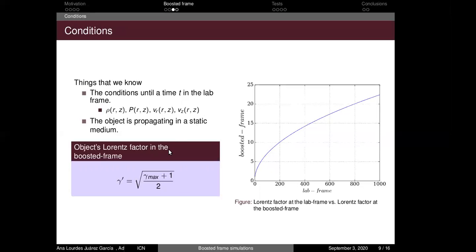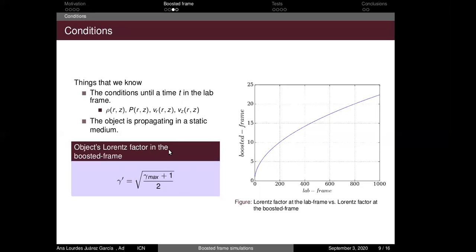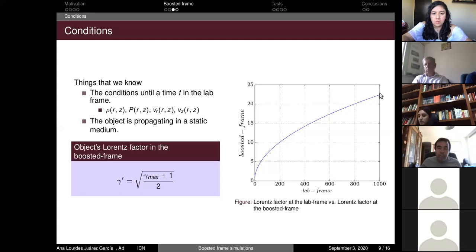So for instance, an object with a Lorentz factor of 1000 in the lab frame moves with a Lorentz factor of 22 in the boosted frame, so it reduces a lot.